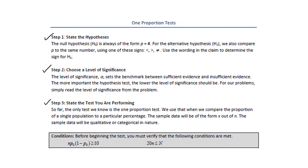The first step is where we state the hypotheses. There are two hypotheses to state. The first is the null hypothesis, written H sub 0. This is always going to be of the form P is equal to some number given in the problem. The second hypothesis is called the alternative hypothesis, written H sub 1. That will compare P to the same number, but it will use one of three signs: less than, greater than, or not equal to. The wording in the claim will help you figure out which sign to use for H1.